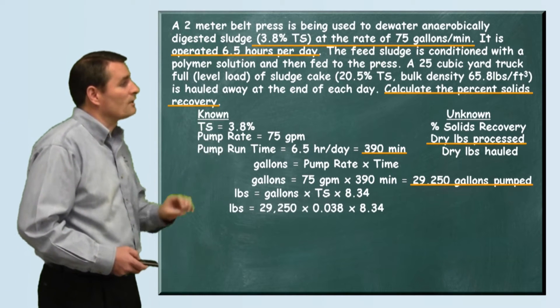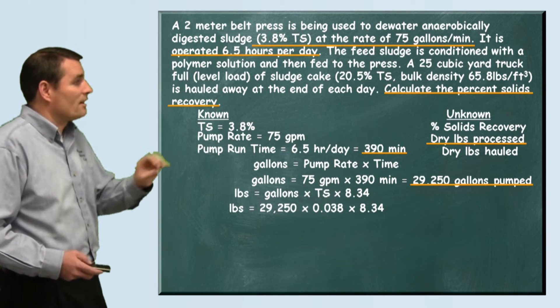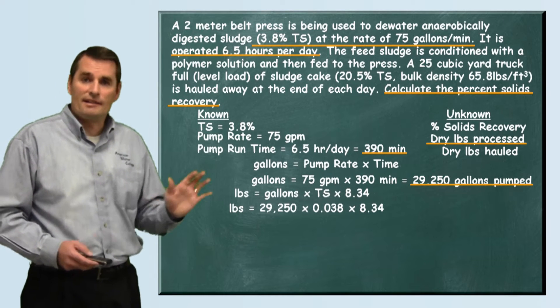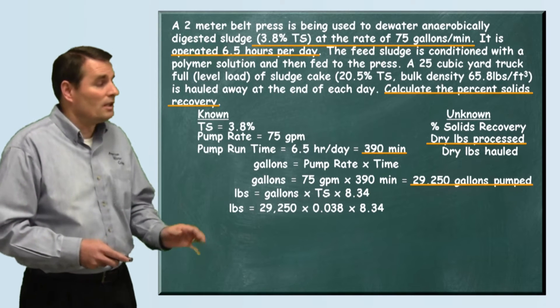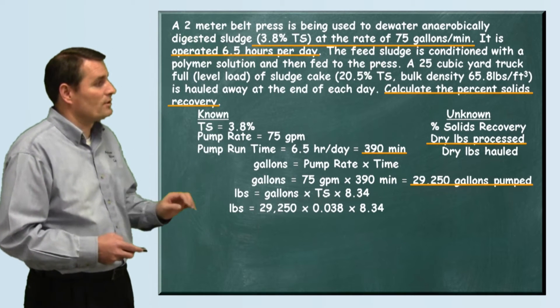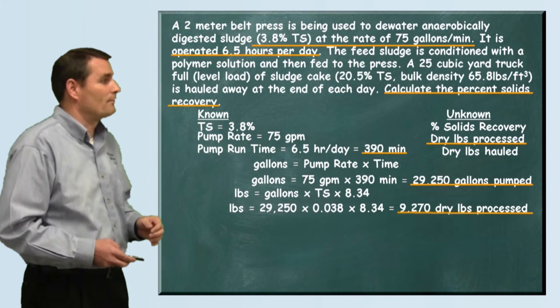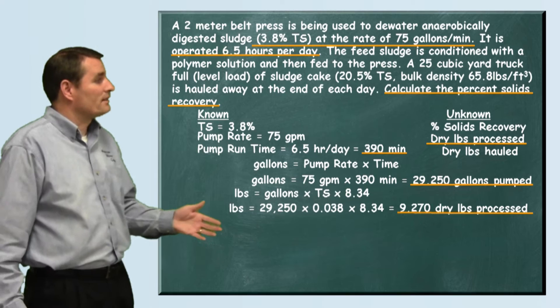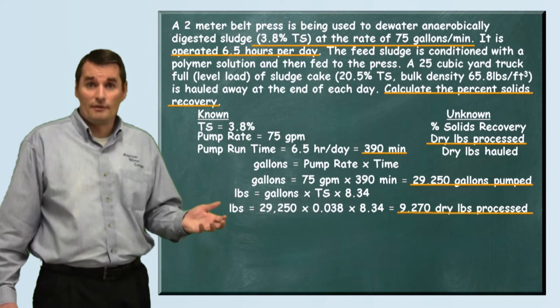When we plug in our 29,250 gallons and our percent total solids 0.038 - remember when you use percents we want to use them in their decimal form, so 3.8 percent is 0.038 - and then we multiply by 8.34. When we do that we see that we processed 9,270 dry pounds of sludge.